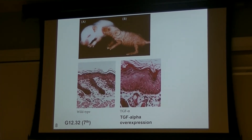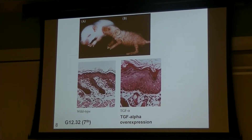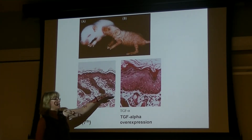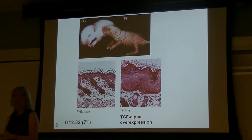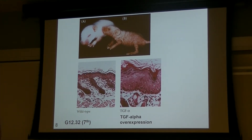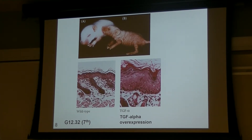With an autocrine growth factor, you have that growth factor acting on the same cells that make it. In this particular example, the basal stem cells make TGF-alpha, and then it feeds back onto those very same basal stem cells and tells them to keep growing, keep proliferating, keep making more cells.